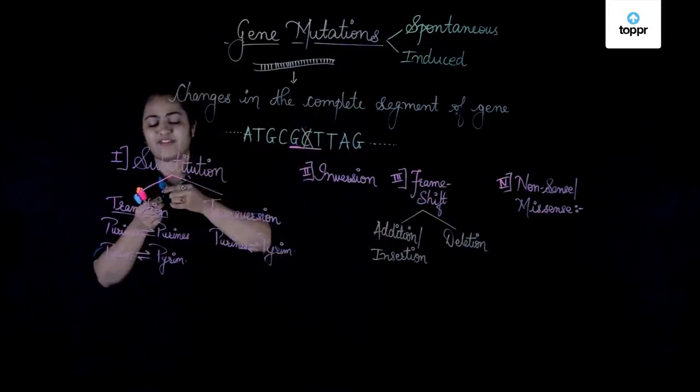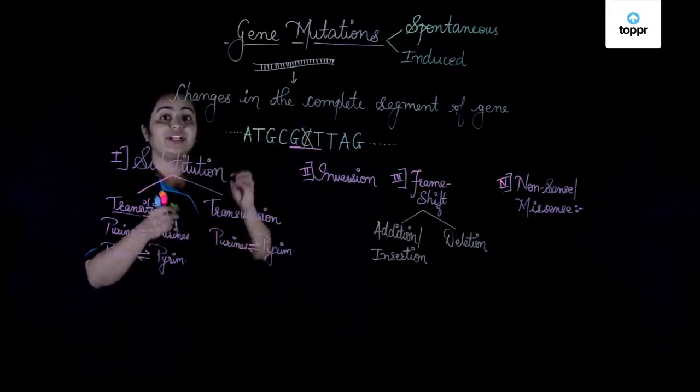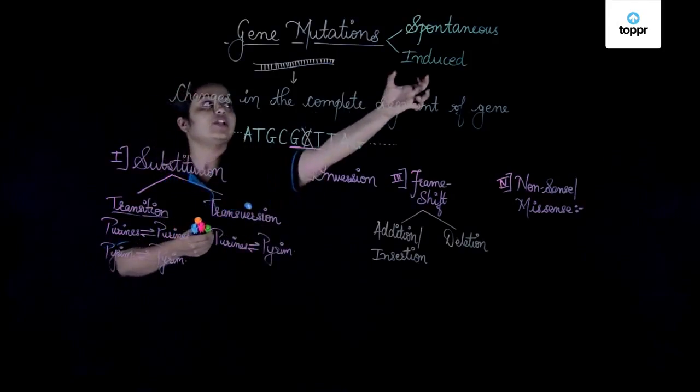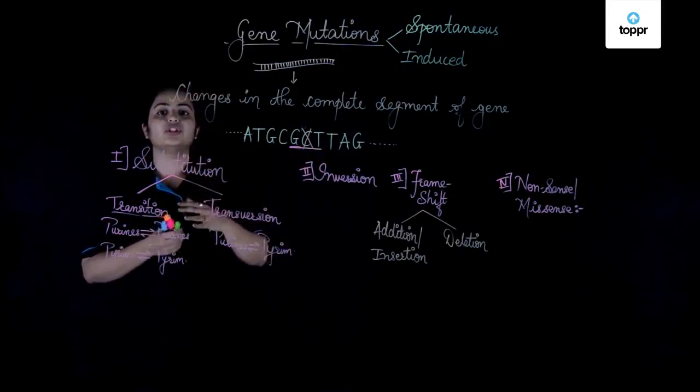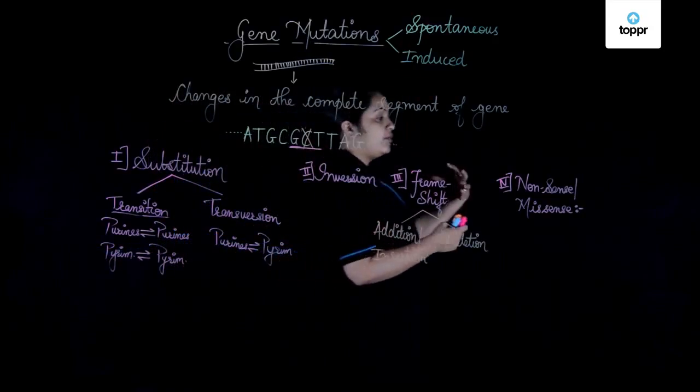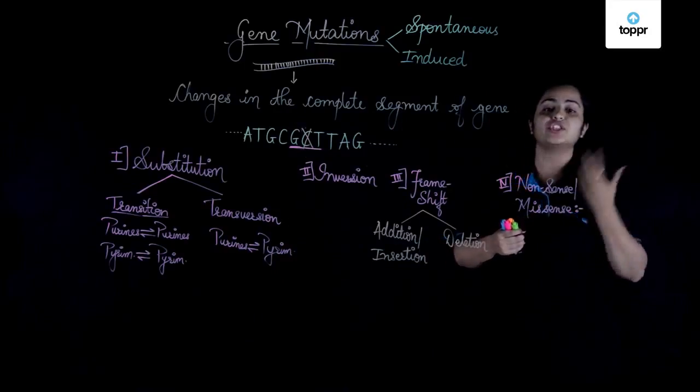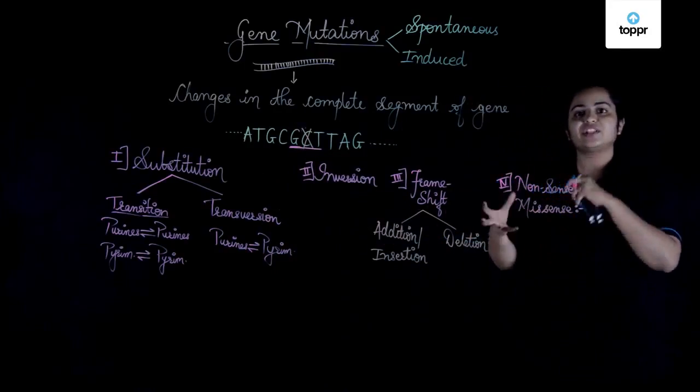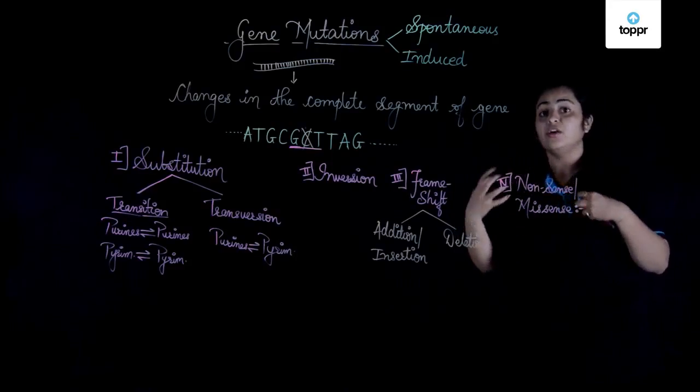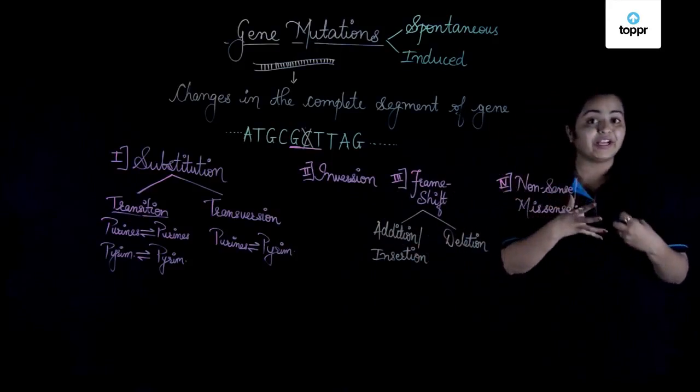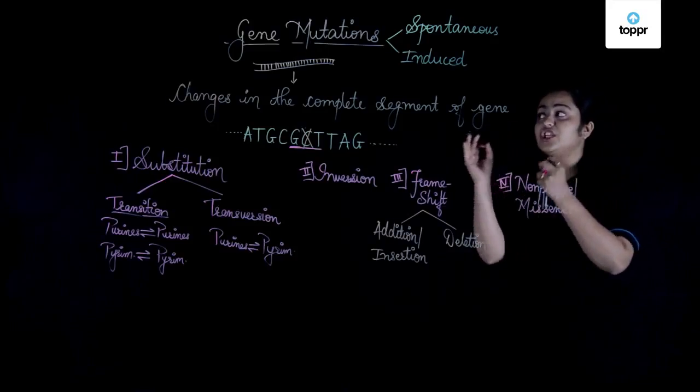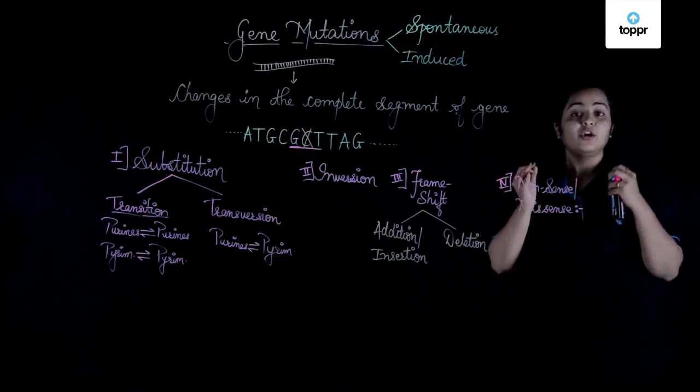When we study genetics, when we study model organisms, we try to induce mutations in them to study what happens. That is where you give the organism an exposure to the mutagen and you carry out experiments. Thus, spontaneous and induced are the types of genetic mutations which you find, and these are the ways in which the gene can change giving rise to a complete different protein which can be non-functional or a defective protein in short.